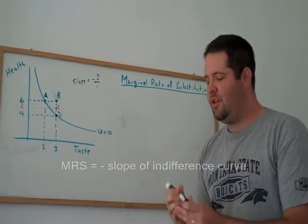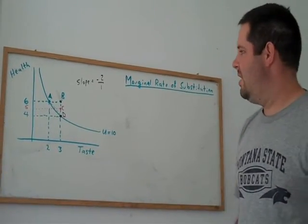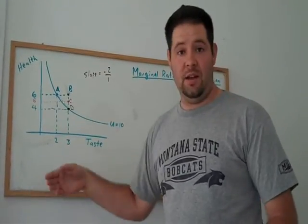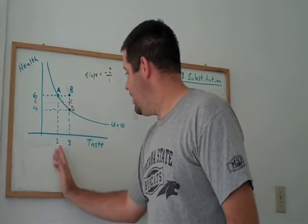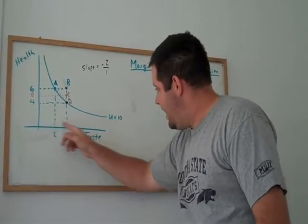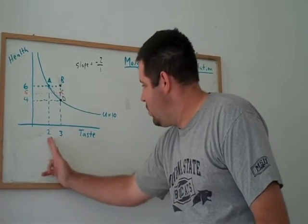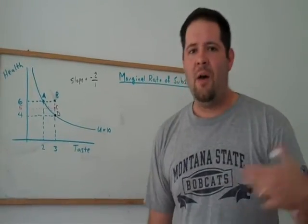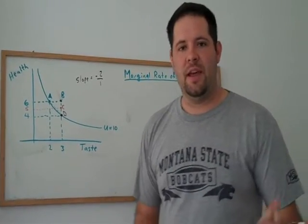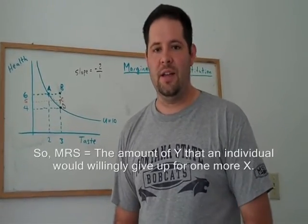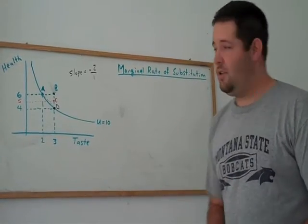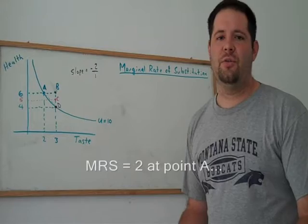Now, the marginal rate of substitution has this interpretation that if I want to make a consumer just as well off, i.e., indifferent, and I want to give that consumer one more unit of the x-axis variable, in this case one more unit of taste, how many units of the y variable can I take away from that person? That answer to that question is the marginal rate of substitution, and in this case it's just the negative of the slope, it's 2.